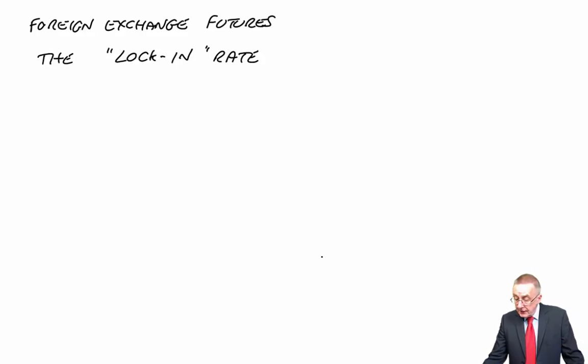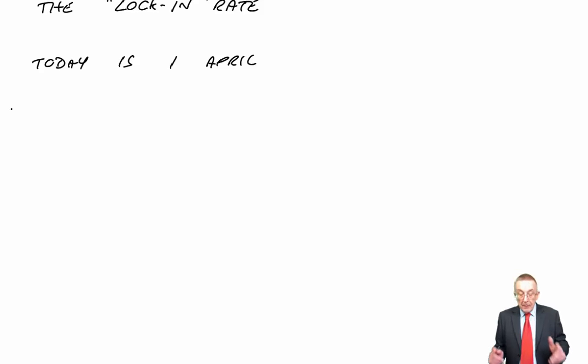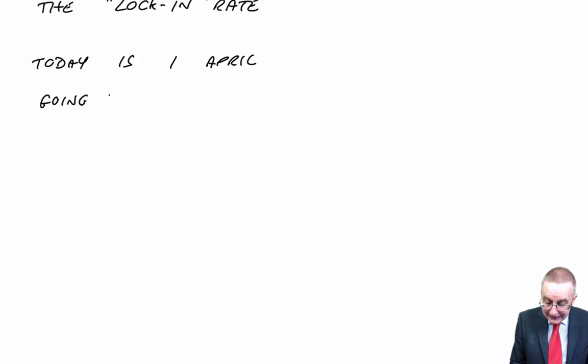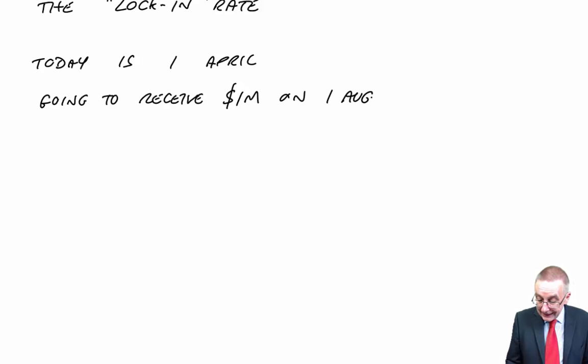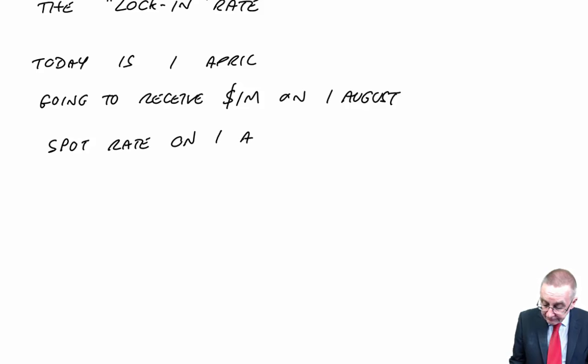Now to explain what it is we're talking about and the relevance and everything, I'm going to make up a very simple example. It's not in the notes so you might need to write this down, but it's very short. Suppose I tell you that today is the 1st of April. We're in the UK, so we're working in pounds, but we're going to receive $1 million on the 1st of August. The spot rate on the 1st of April is 1.50 dollars to the pound.